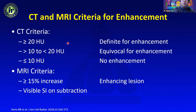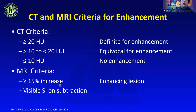The criteria for enhancement on CT: a change of 20 Hounsfield units or more between pre- and post-contrast is considered definite enhancement; 10 to 20 HU is equivocal; 10 HU or less is considered no enhancement. On MRI, because we don't have absolute units, a relative increase of 15 percent or more on pre- and post-contrast is considered enhancing. Subtraction images on MRI are also helpful to detect internal enhancement.